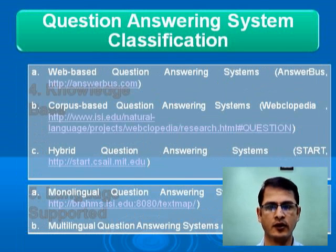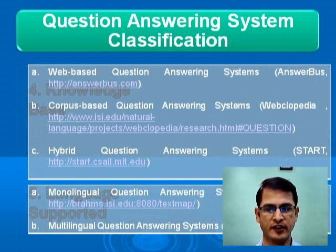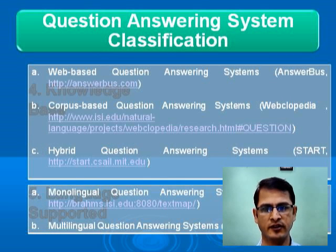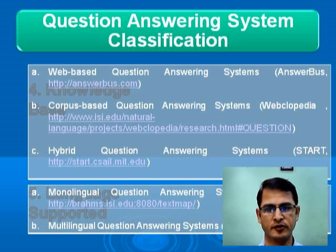Another criteria for classification of question answering systems is from where their knowledge base comes. According to that, there are again three types: web-based question answering systems, corpus-based question answering systems, and hybrid question answering systems — which use both.